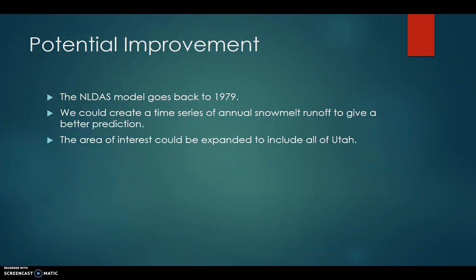We did have a couple of ideas for things we could do to improve this in the future. To begin, we would look at including more water years — NLDAS has data back to 1979. Going back farther, you could turn this into an estimate tool by having a historical graph of what the snowmelt has typically been, then projecting and looking at current estimates to see if you're on track. We also looked at including more watersheds throughout Utah, though it was just a question of how fast the tool would run.